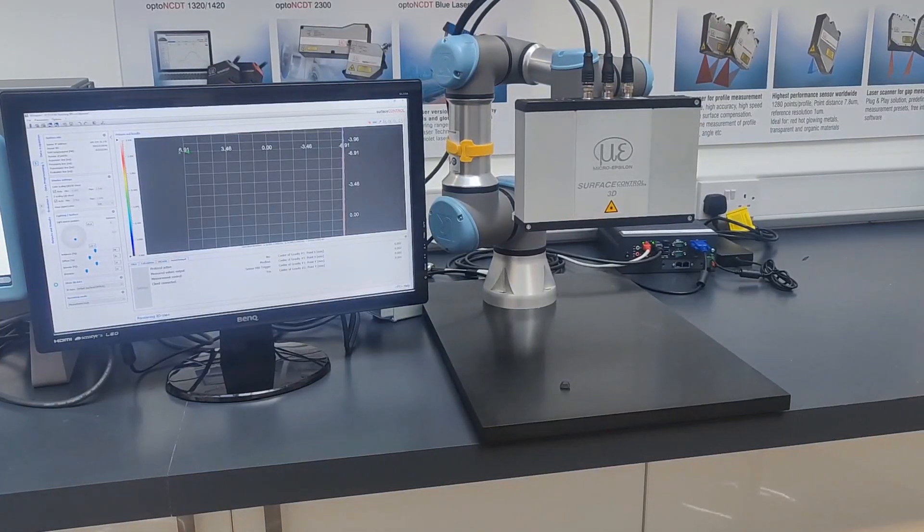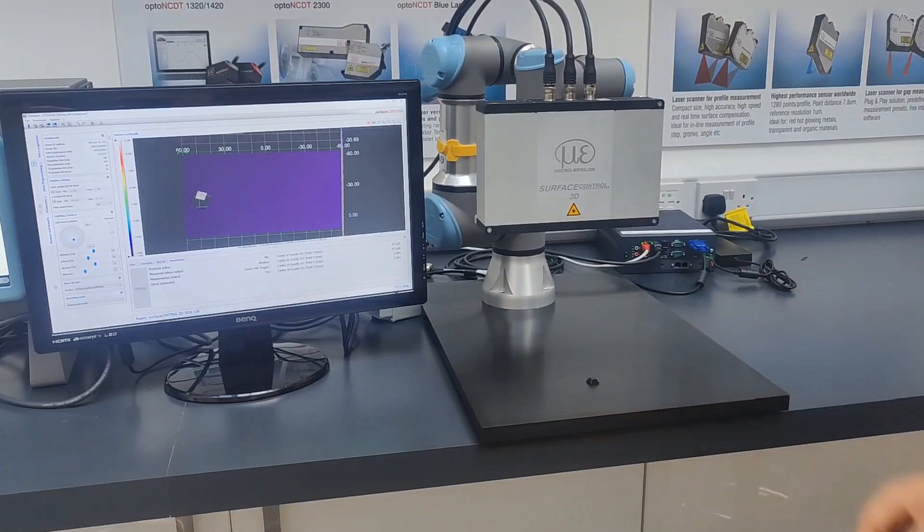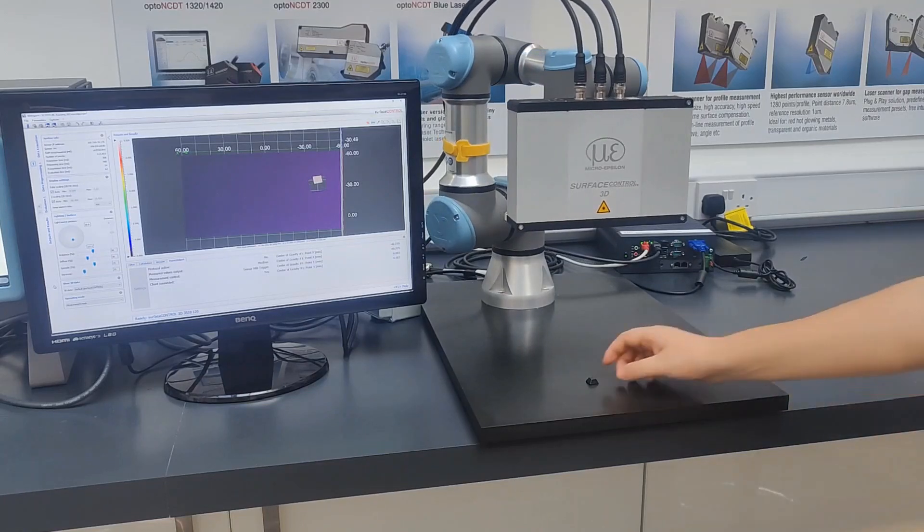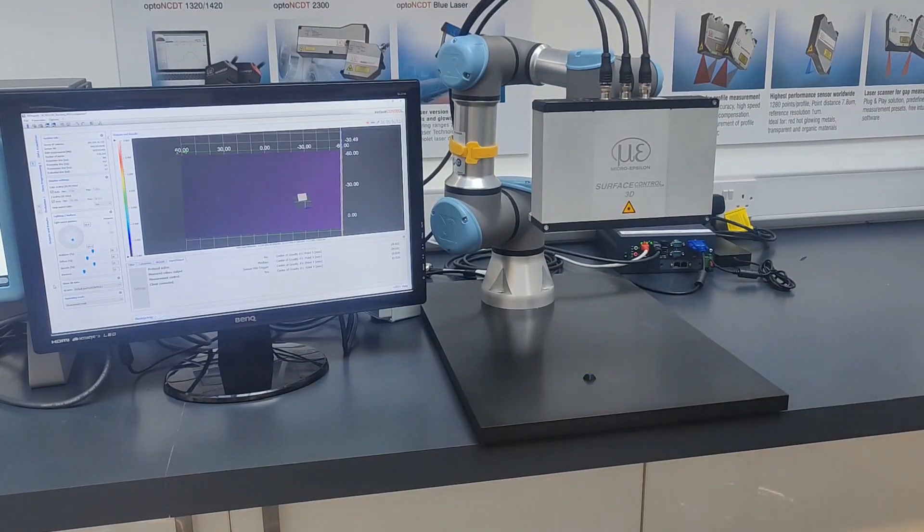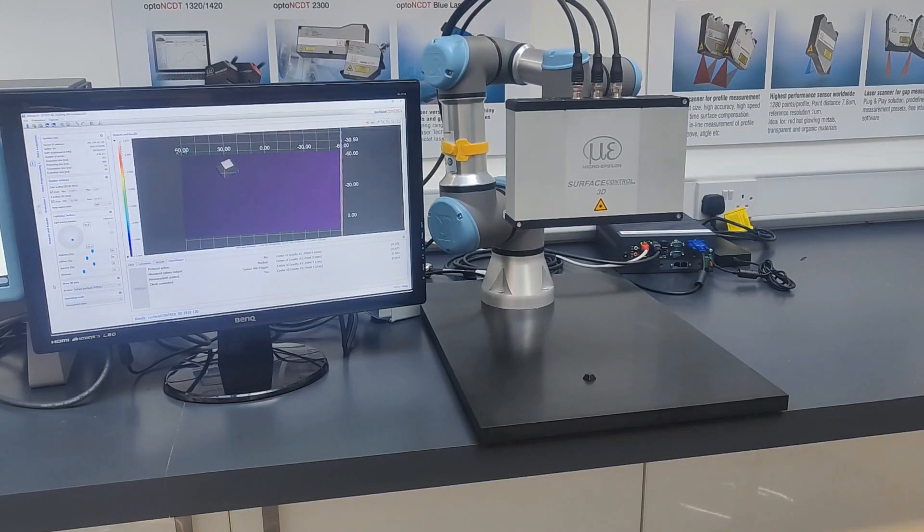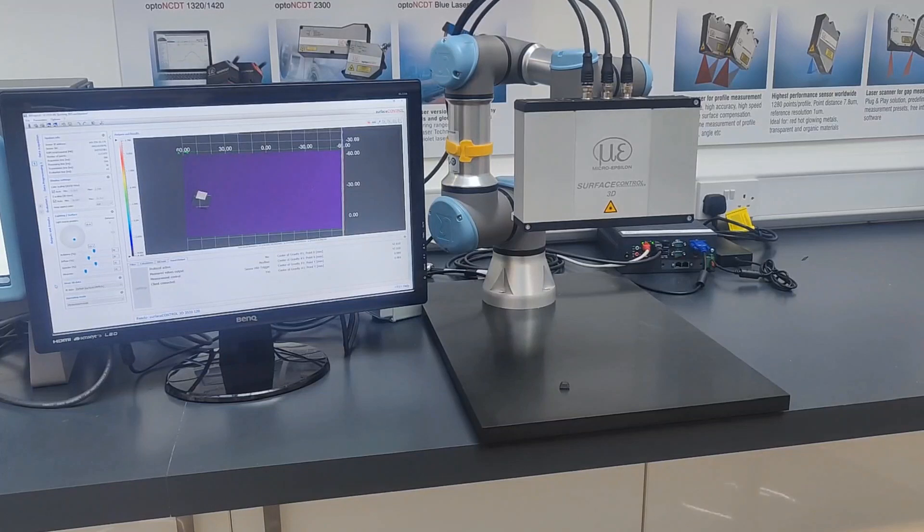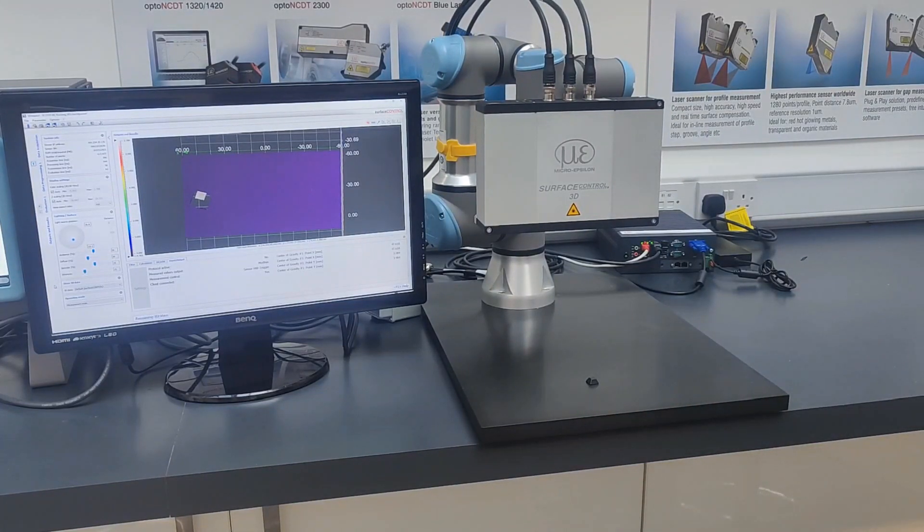So as an example of control communication, we have a surface control 3D mounted on a universal robots UR3 cobot. And I've programmed the surface control to detect the position in XYZ at the highest point and then reposition that to the center of the surface controls measuring field. Each time the target is adjusted, the surface control is triggered to find the target and surface control then reports the new coordinates to the robot via Modbus, which in turn repositions itself. These are the sorts of functions that could be useful for pick and place applications.